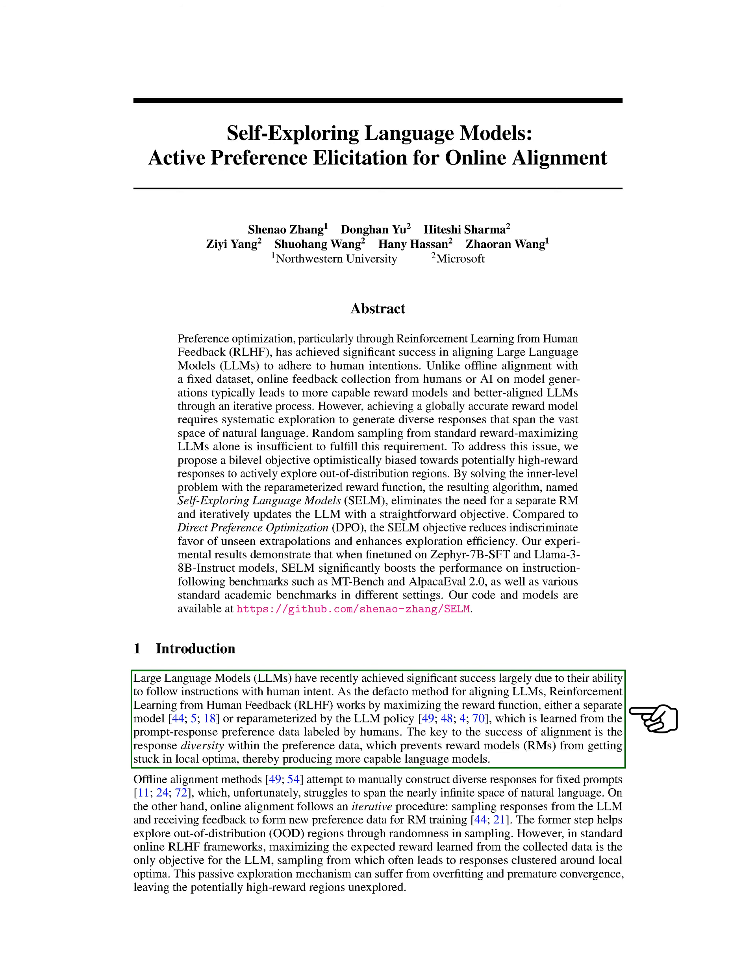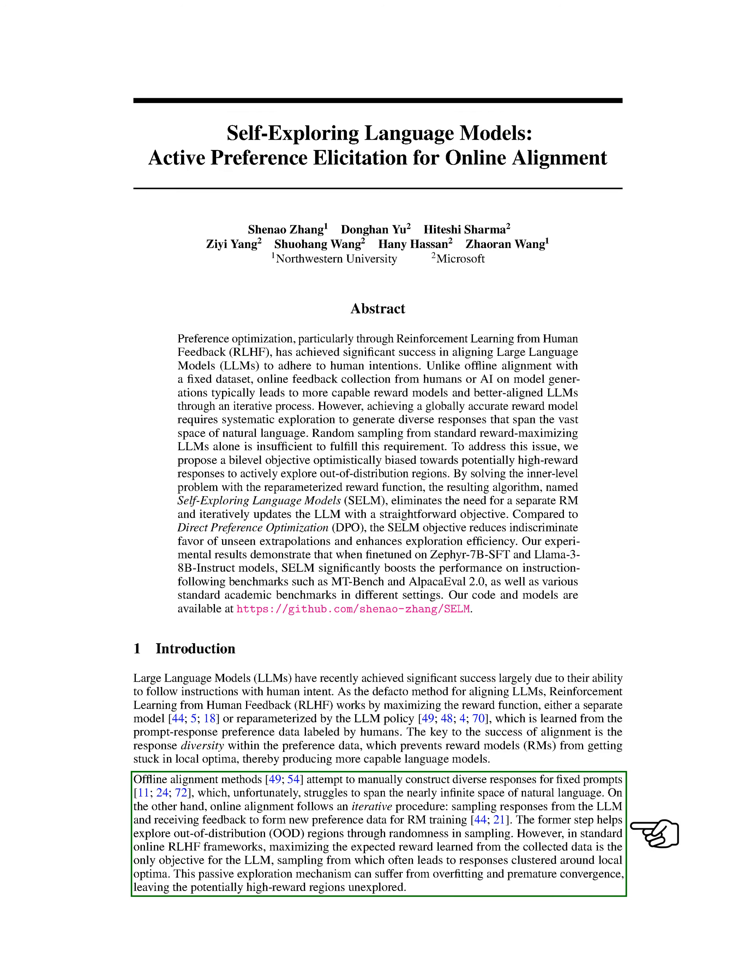This reward function is learned from data where humans have labeled their preferences for prompt-response pairs. The key to successful alignment lies in having diverse responses in the preference data. This diversity prevents the reward models from getting stuck in local optimal solutions, leading to the development of more capable language models.